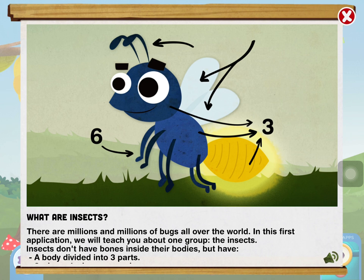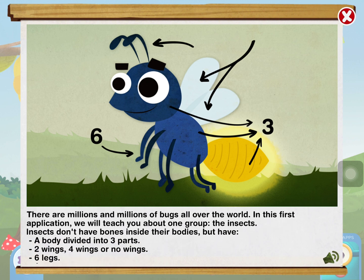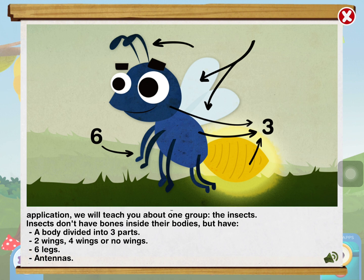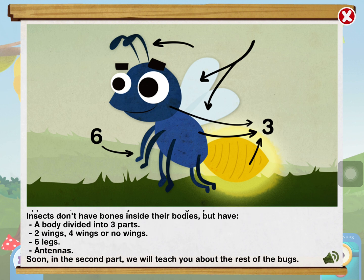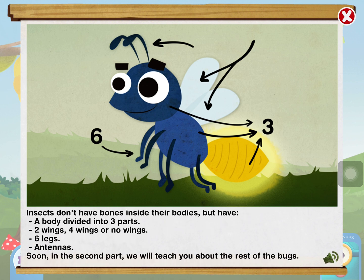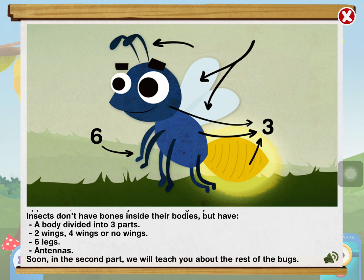There are millions and millions of bugs all over the world. In this first application, we'll teach you about one group, the insects. Insects don't have bones inside their bodies, but have a body divided into three parts, two wings, four wings or no wings, six legs, and antennas. Soon in the second part, we'll teach you about the rest of the bugs.